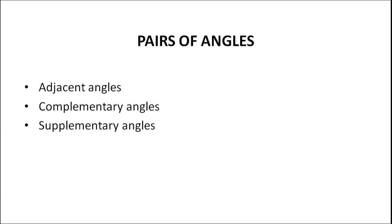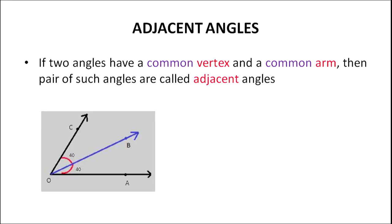Now we will move on with the next section — pairs of angles — and here I will deal with three kinds: the first one is adjacent angle, next is complementary angle, and the final one is supplementary angles. Adjacent means something that is very close. If two angles have a common vertex and a common arm, then such a pair of angles is called adjacent angles. In this diagram there is a common vertex O and a common arm OB.